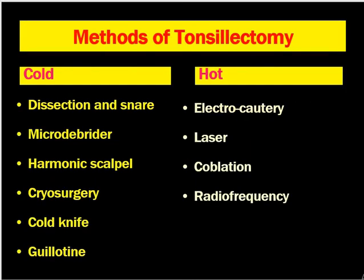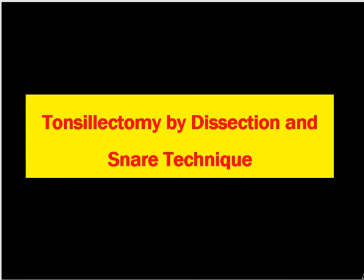Now let's discuss the different methods of tonsillectomy. They are classified as hot and cold methods. Cold methods include dissection and snare, microdebrider, harmonic scalpel, cryosurgery, cold knife resection, and the Gilton method — now historical. They are called cold methods because they don't use heat for dissection. Hot methods like electrocautery, laser, coagulation, and radiofrequency produce heat. Dissection and snare is still practiced in many centers, but nowadays we usually use bipolar electrocautery or coagulation.